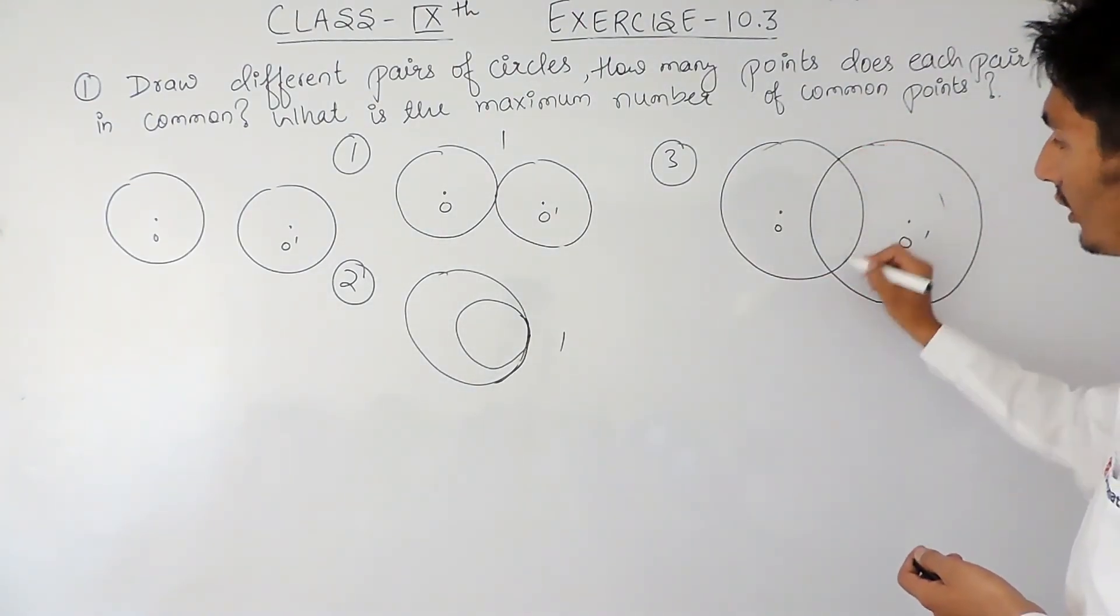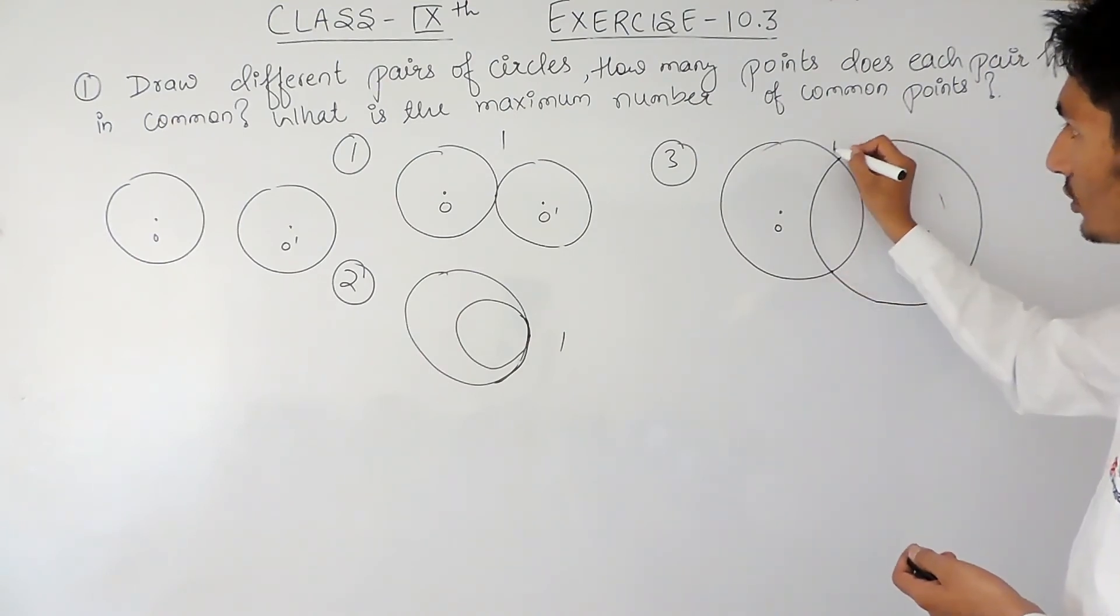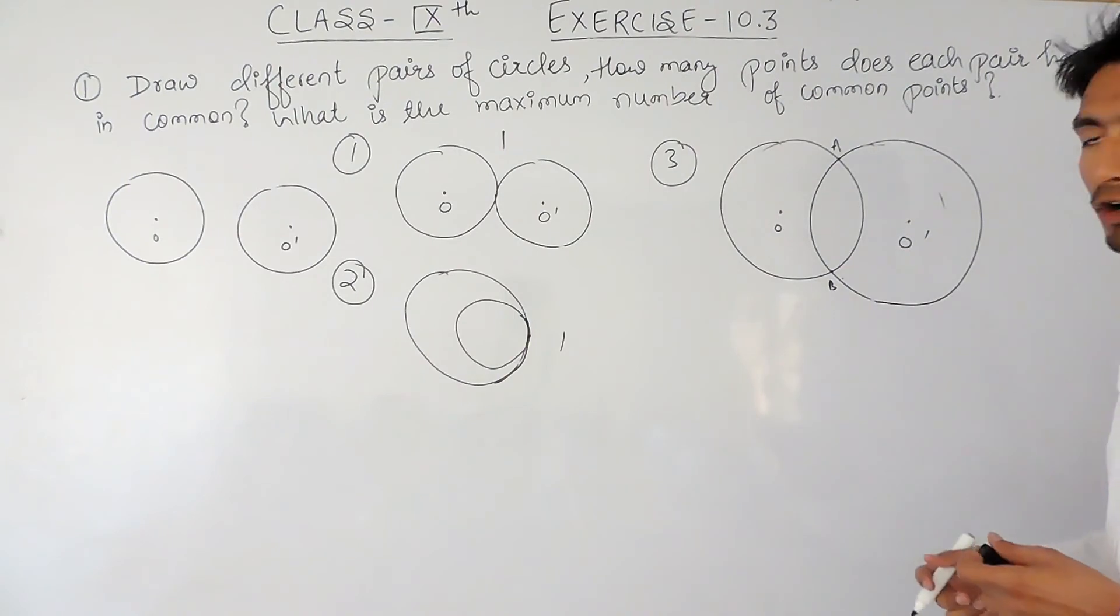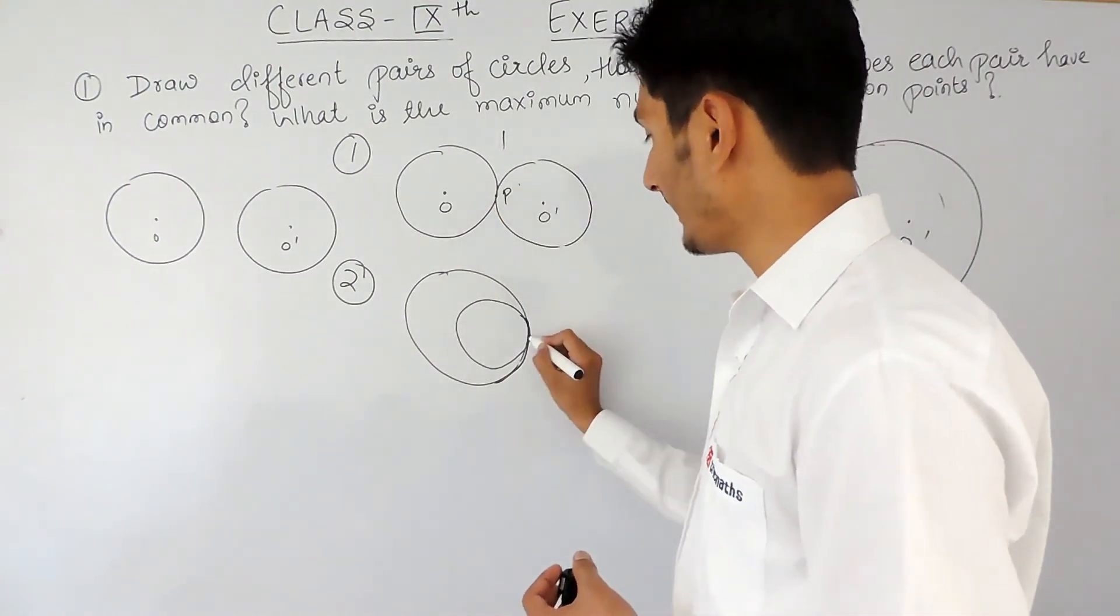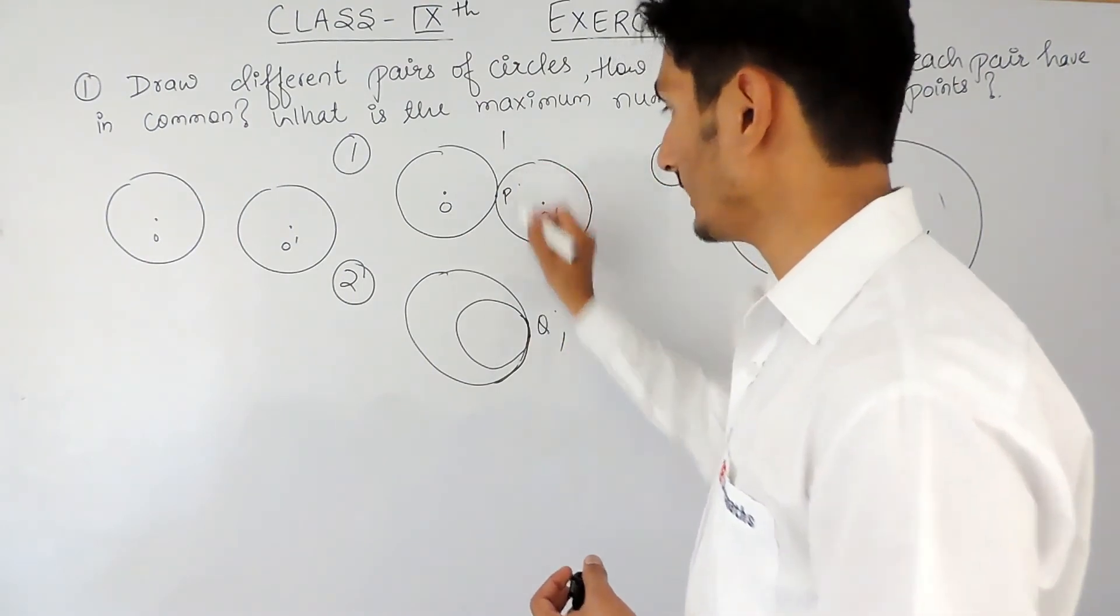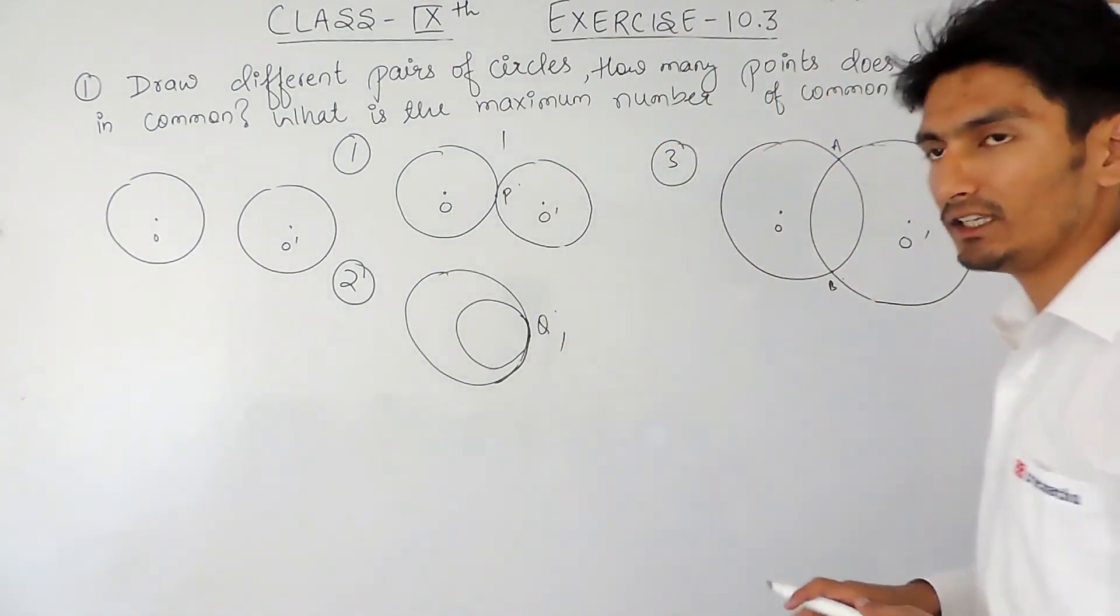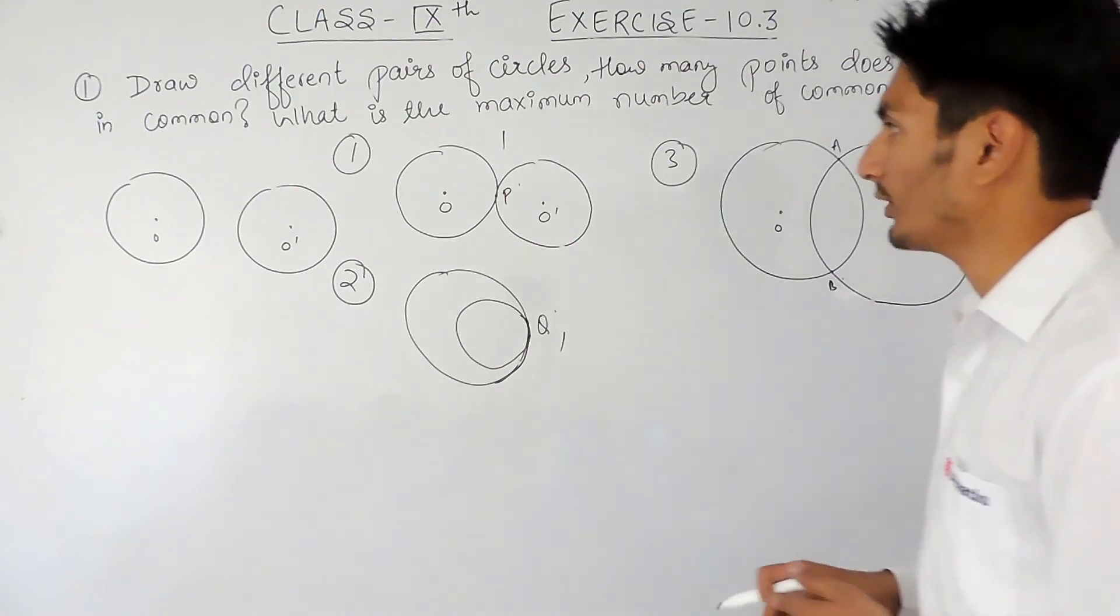Here the number of common points are two, so A and B. This is the common point B and this is the common point Q. So in the previous cases the common points are one each, and in this case the common points are two.